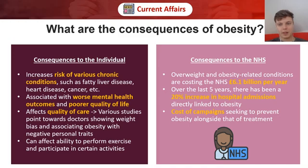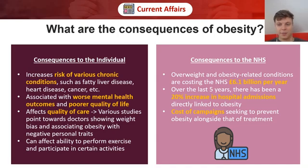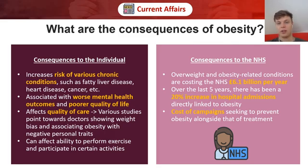Let's take a look at the consequences of obesity. In terms of consequences to the individual, obesity increases the risk of various chronic conditions such as fatty liver disease, heart disease, cancer, and so on. It's also associated with worse mental health outcomes and a poorer quality of life — and it's worth thinking about whether this is partly a societal problem where we place stigma on being obese. Quite worryingly, obesity also seems to affect quality of care, with studies showing doctors demonstrate a degree of weight bias. Finally, obesity can affect the ability of individuals to perform exercise and participate in certain activities, which in turn can actually reinforce the obesity itself.